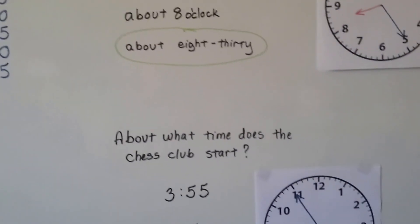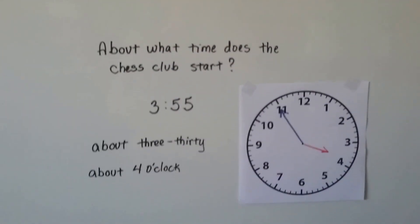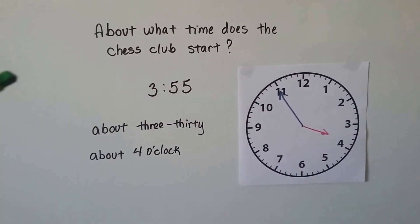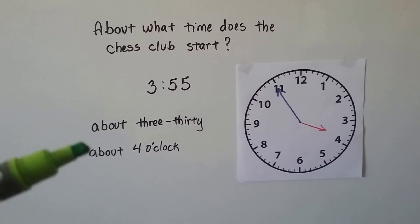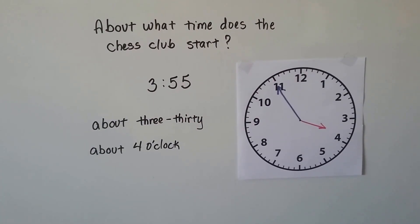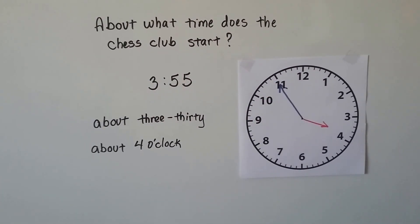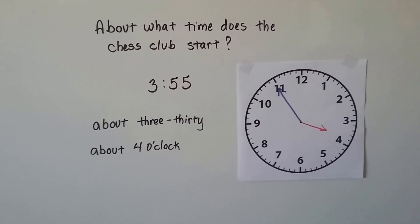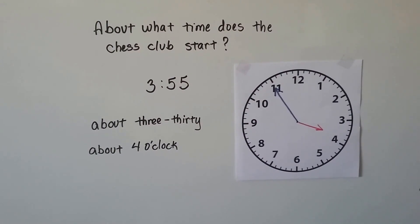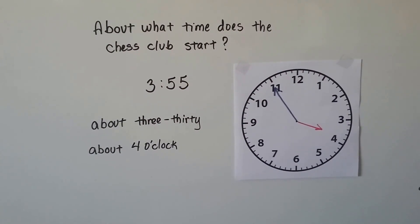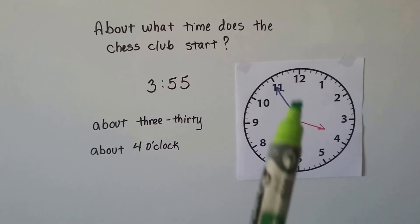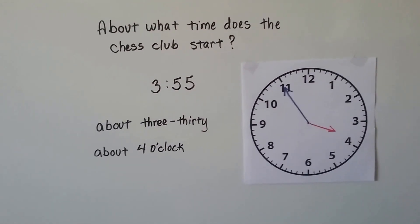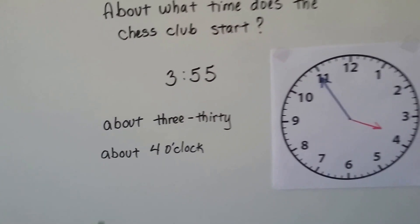How about this — what time does the chess club start? It starts at 3:55, but about what time is that? Is it about 3:30 or about four o'clock? The minute hand is on the 11. If the minute hand were on the 12, it would be four o'clock. Since it's so close to the 12, if you said four o'clock, you'd be right.